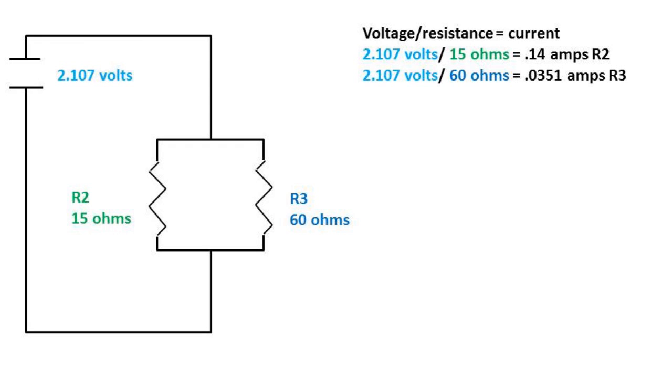Recall from parallel that the same voltage goes through each resistor. So we can take the voltage over the resistance to get the current of each resistor. In this case, resistor two current is 0.14 amps and resistor three's current is 0.0351 amps.